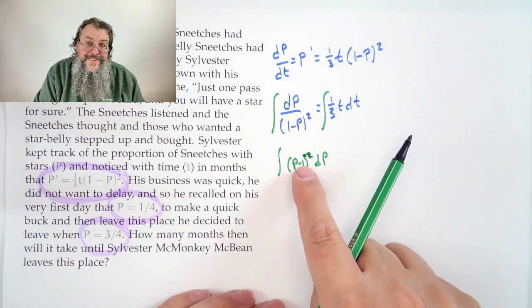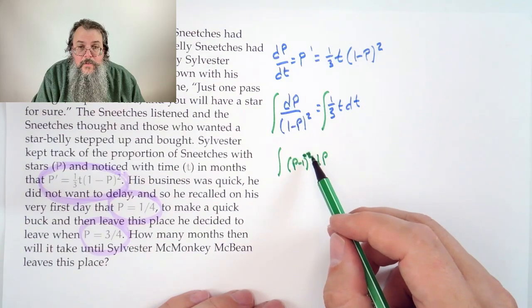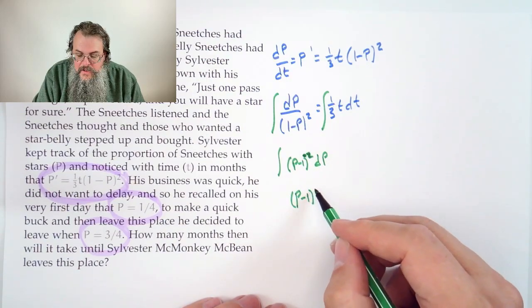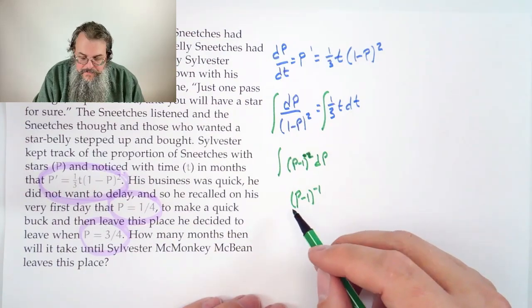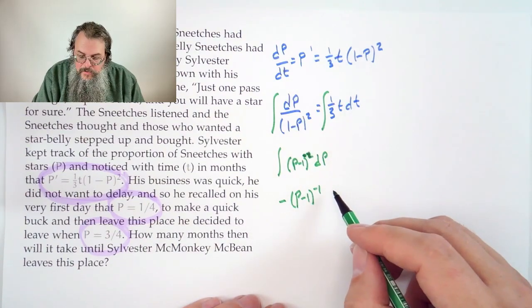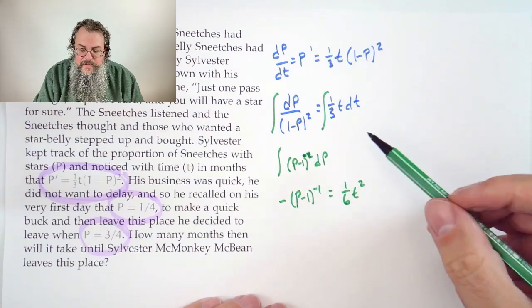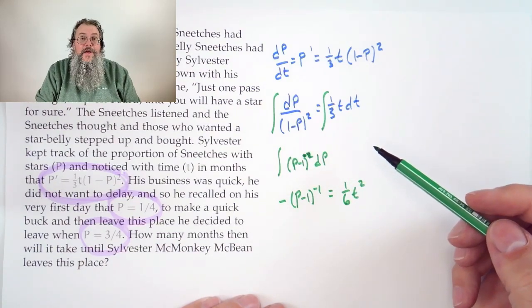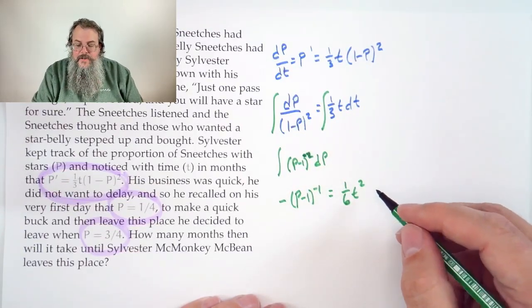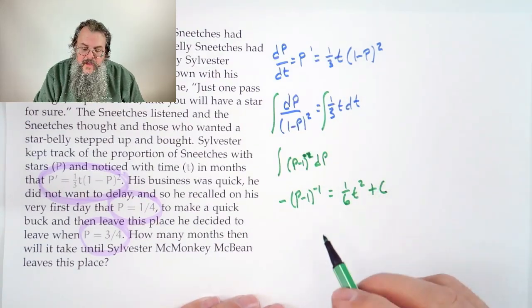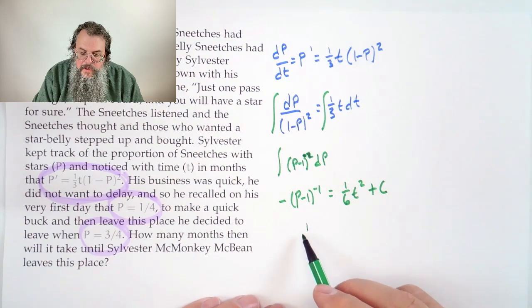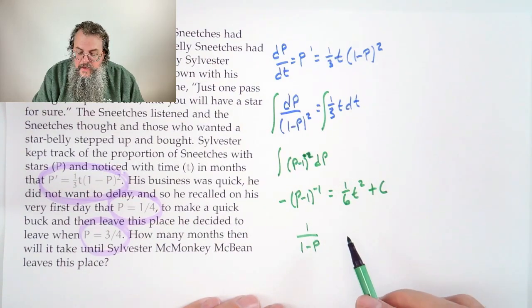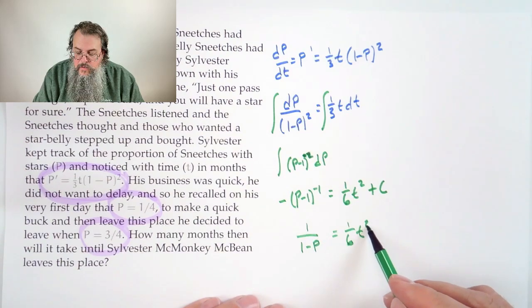The way you integrate something to a power is, of course, and this is simple on the inside, what you would do is add 1 to the power. So in this case, you would end up with (P minus 1) to the minus 1, and then of course you need to divide by that new power, so that's a minus there. On the other side, that'll be 1/6 T squared, because you have a 1/3 already. Integral of T is T squared over 2, and so you'll have a third and a half, and they combine to make 1 over 6. And then of course don't forget your plus C.